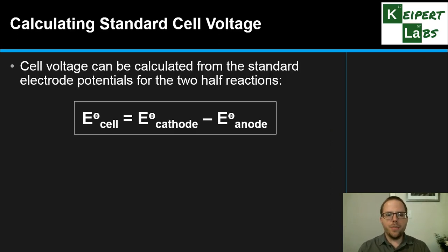Cell voltage can be calculated from the standard electrode potentials for the two half reactions using this formula: E°cell = E°cathode - E°anode. So remember this formula. It's simple - you're just taking two numbers and subtracting one from the other.